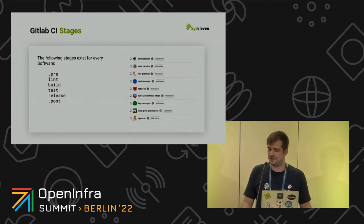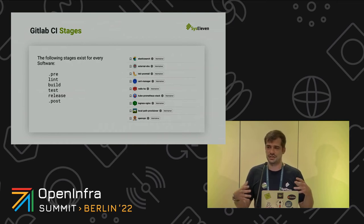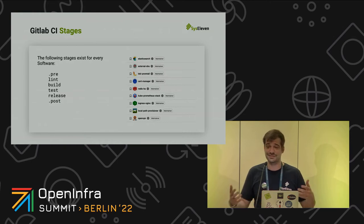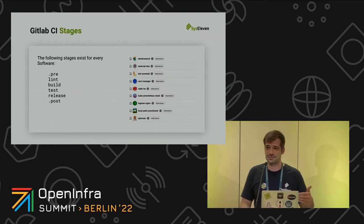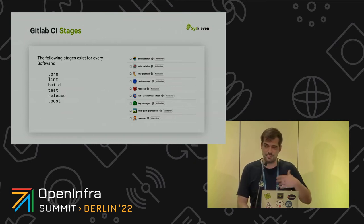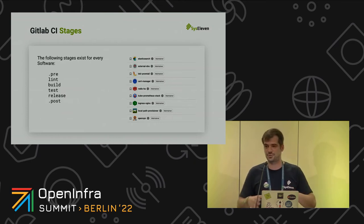The GitLab CI stages we defined are six in total. There's a dot-pre stage which gathers all resources that are always the same for each and every building block or software service. Then we have a linting stage where we verify that the build process is done correctly. Then there's a test stage, a release stage where we bundle everything together, and a post stage where we just clean it up.